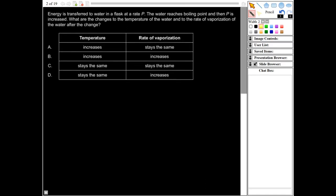Okay, next question. It says energy is transferred to water in a flask at a rate p, the water which is a boiling point, and then p is increased. What are the changes to the temperature of the water and the rate of vaporization to the water after the change?